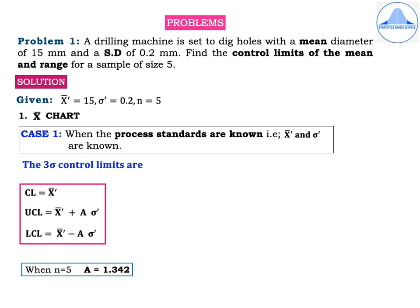Problem 1: A drilling machine is set to dig holes with a mean diameter of 15 mm and a standard deviation of 0.2 mm. Find the control limits of the mean and range charts for a sample of size 5. Since the mean diameter and standard deviation are already given, this is a case where process standards are known. Given: x-bar-dash = 15, sigma-dash = 0.2, n = 5.